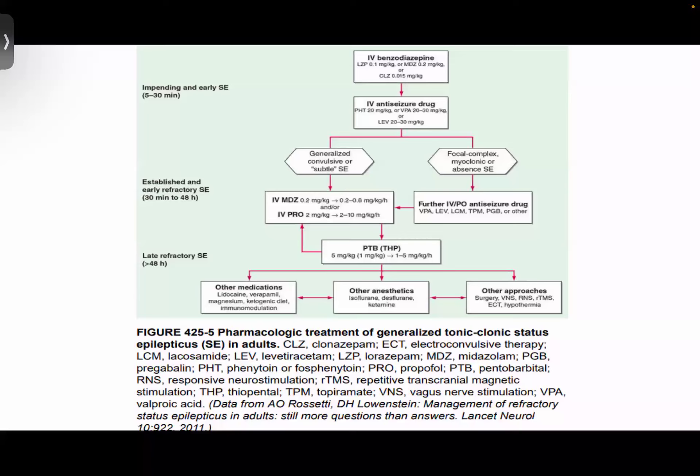The next drug in line will be pentobarbital at 5 mg per kg, maximum 1 to 5 mg per kg per hour. If the status epilepticus is still not settling, we can try other agents like lidocaine, verapamil, magnesium, ketogenic diet, immunomodulation, or other anesthetic agents like isoflurane and desflurane. Even other approaches like surgery, nerve stimulation, and hypothermia can also be tried.